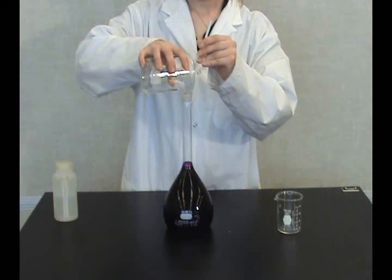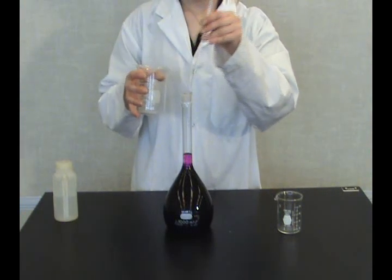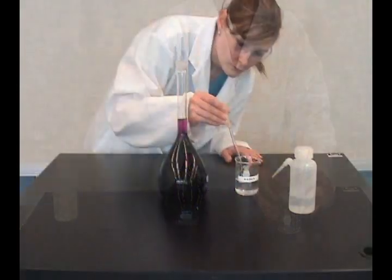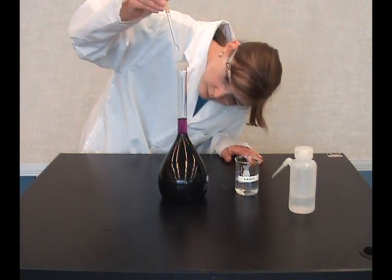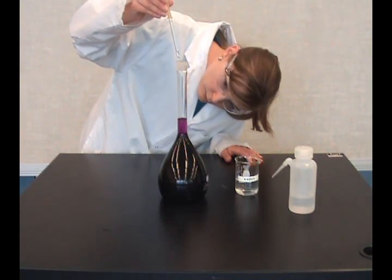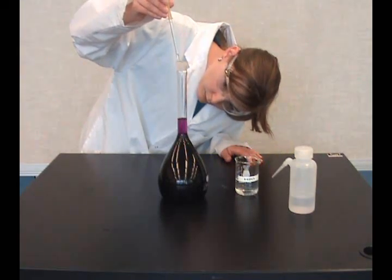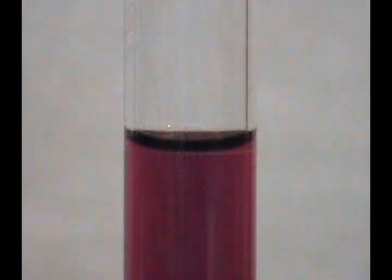Continue filling with water until just below the etched line. Add the water drop-wise with a Pasteur pipette until the bottom of the meniscus curve is sitting on top of the etched line.